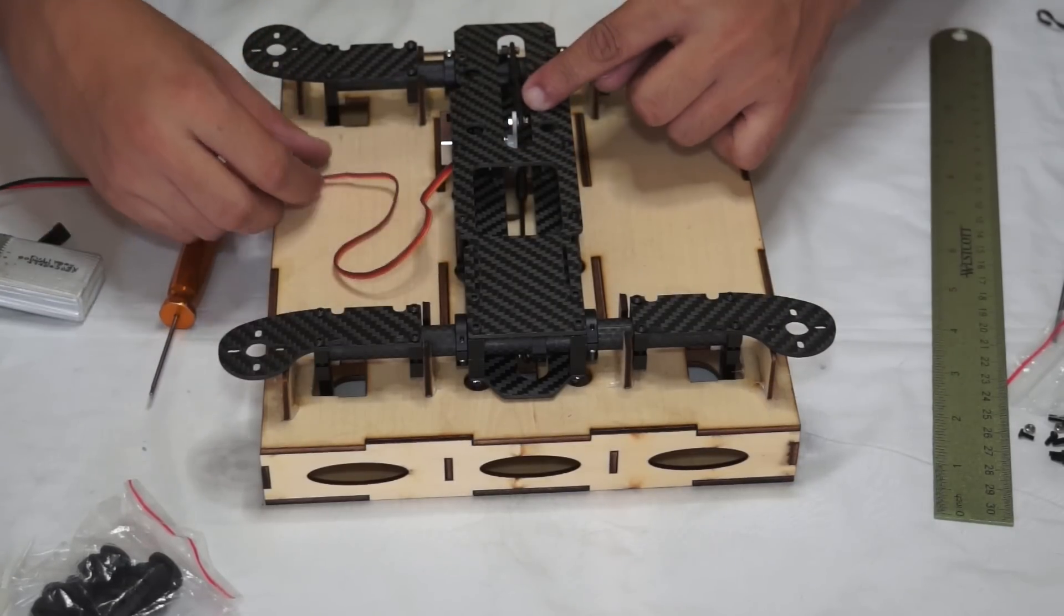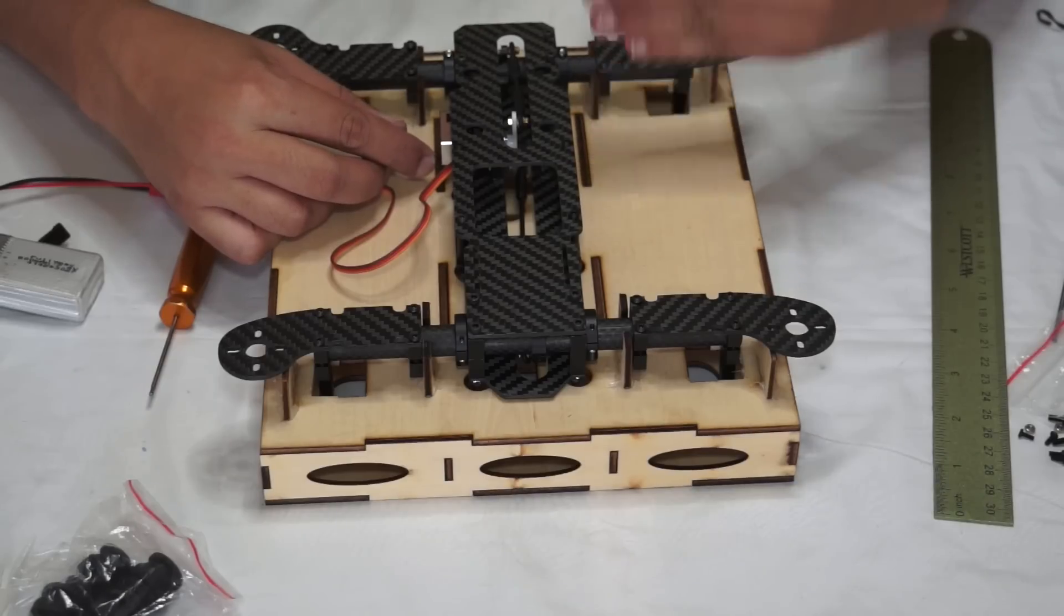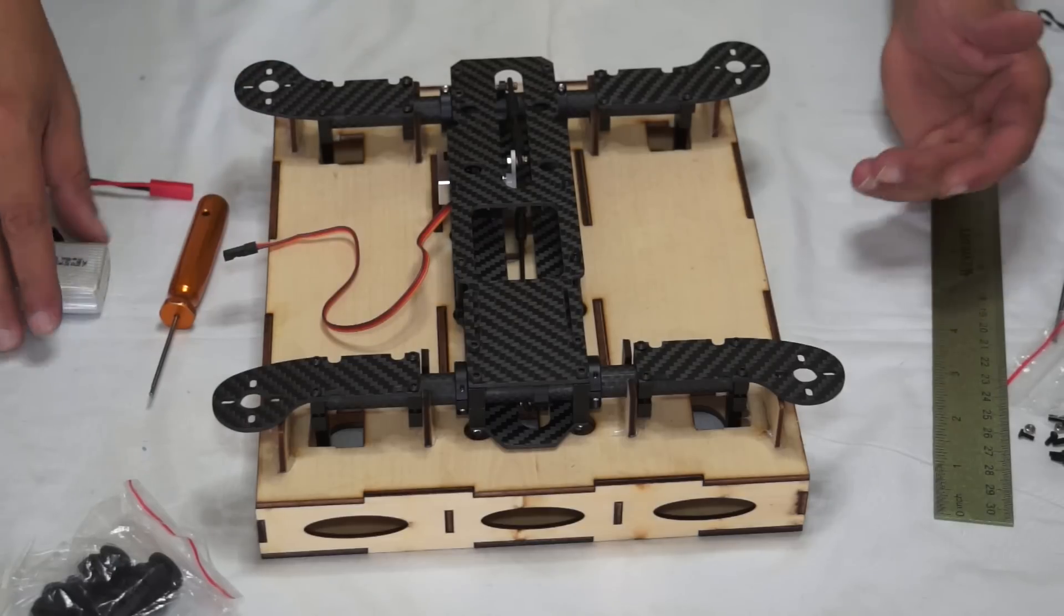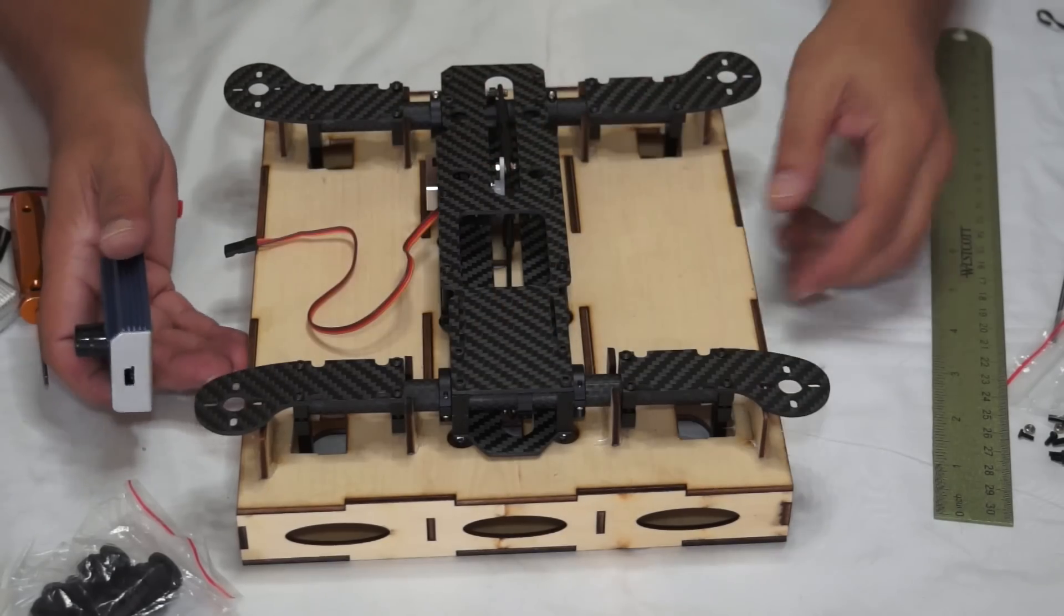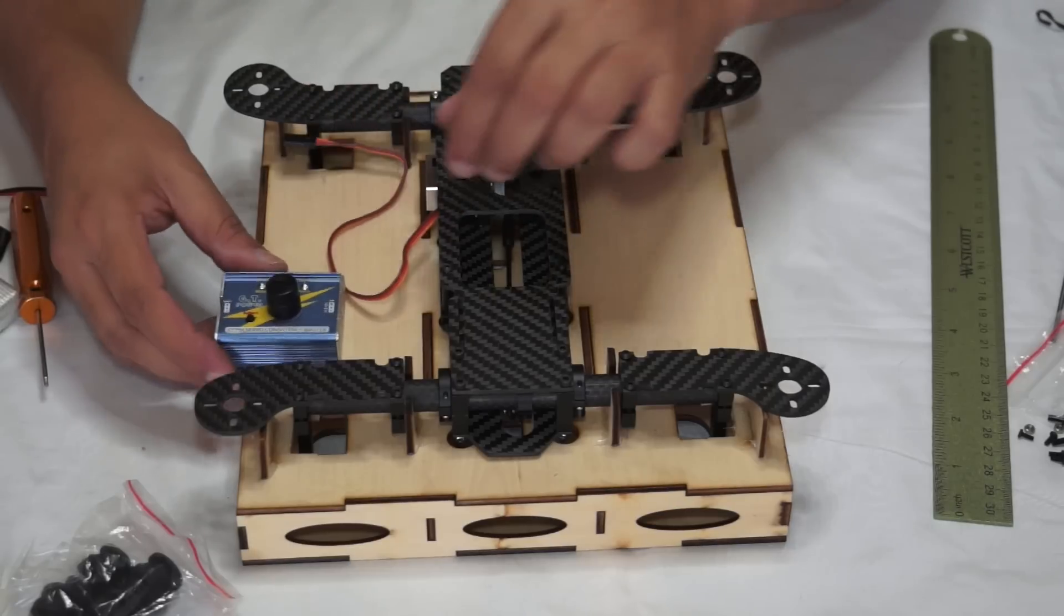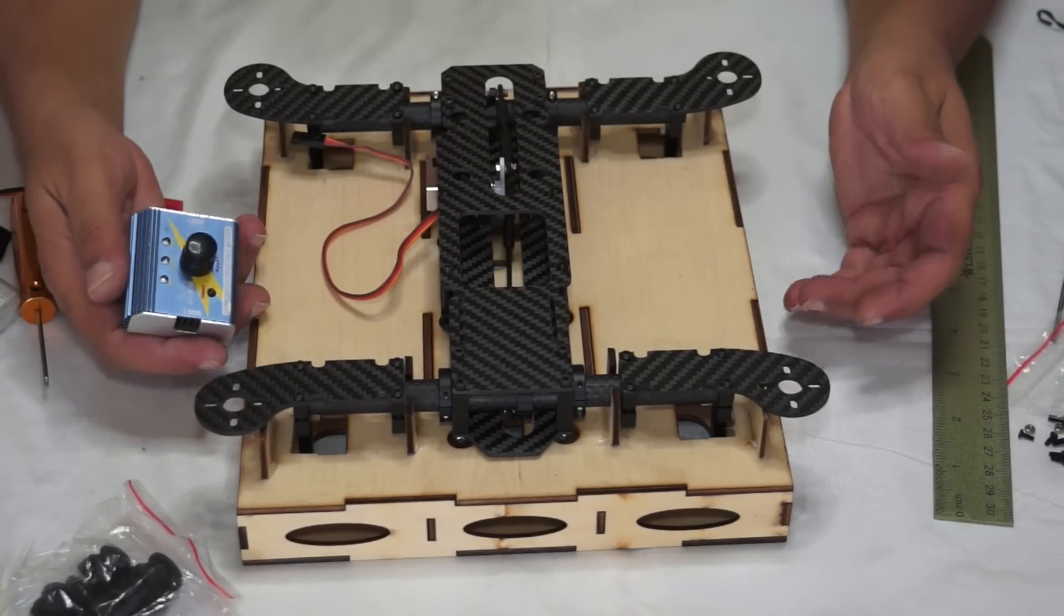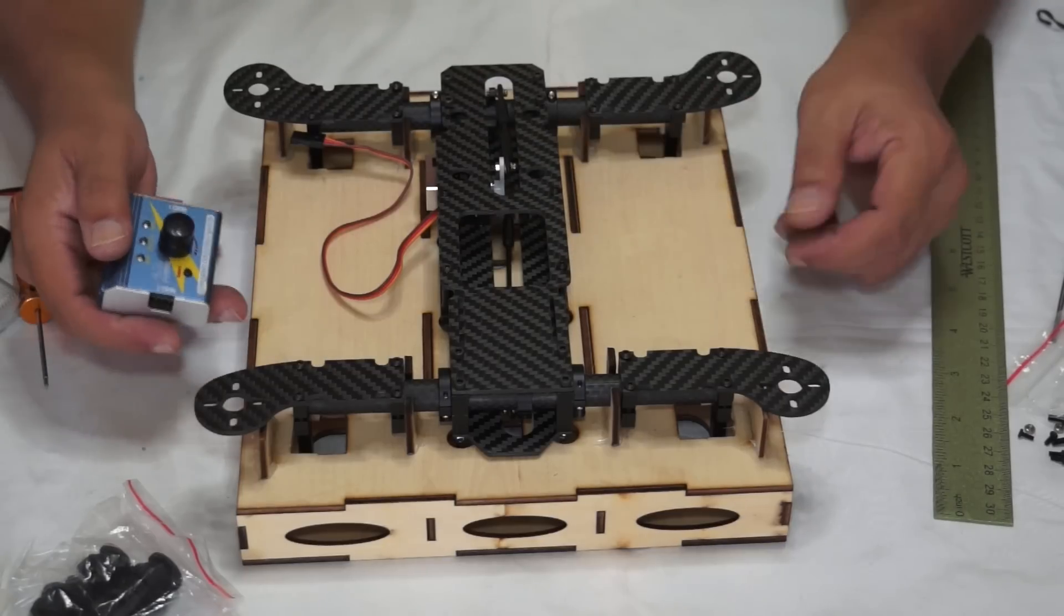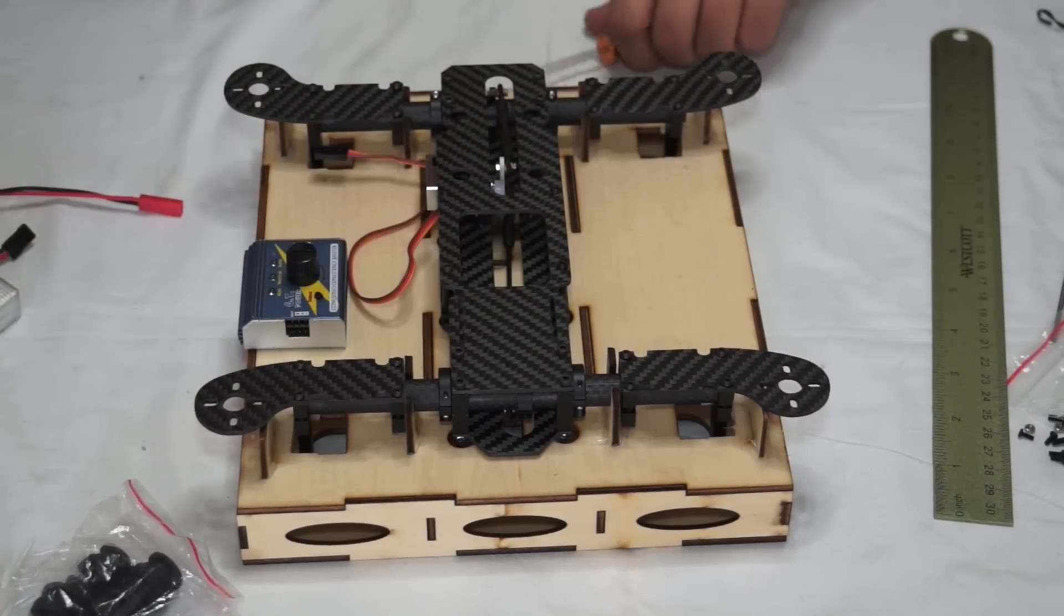Also, make sure your servo is centered and the servo arm is perpendicular, vertically perpendicular to the frame. For that we will have to turn the power on to the servo and then you're going to tighten the screws. Let's power on the servo using the servo tester. If you don't have a servo tester, feel free to connect CC3D and the receiver and the servo to your receiver and then power on. Everything works actually the same way.